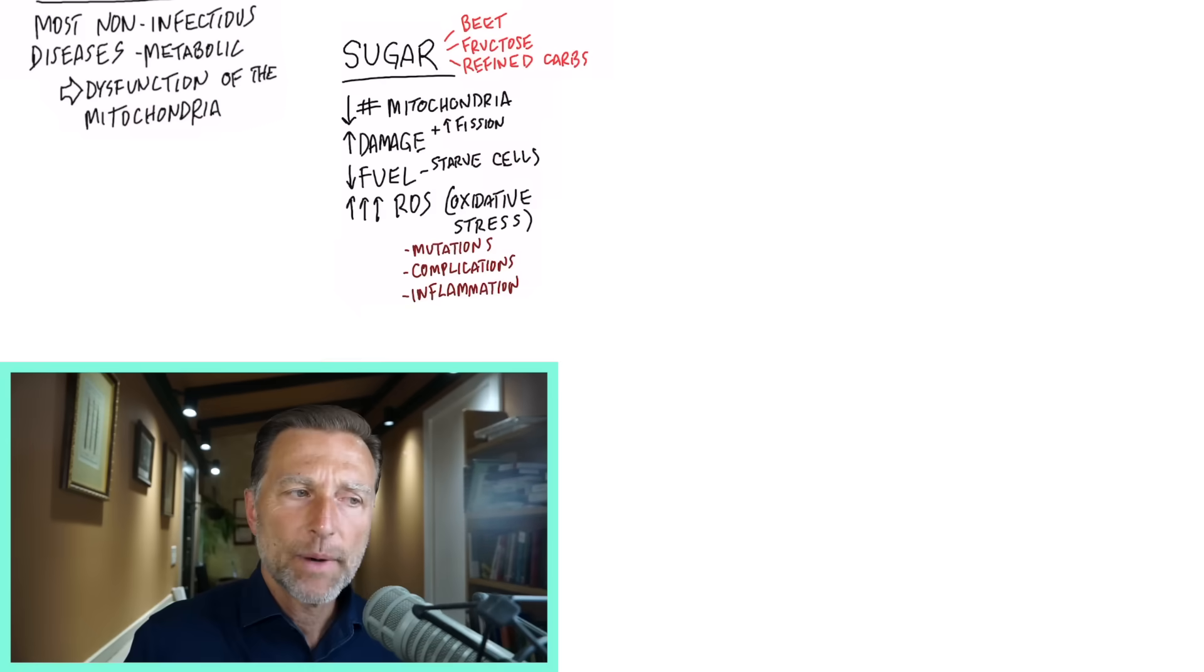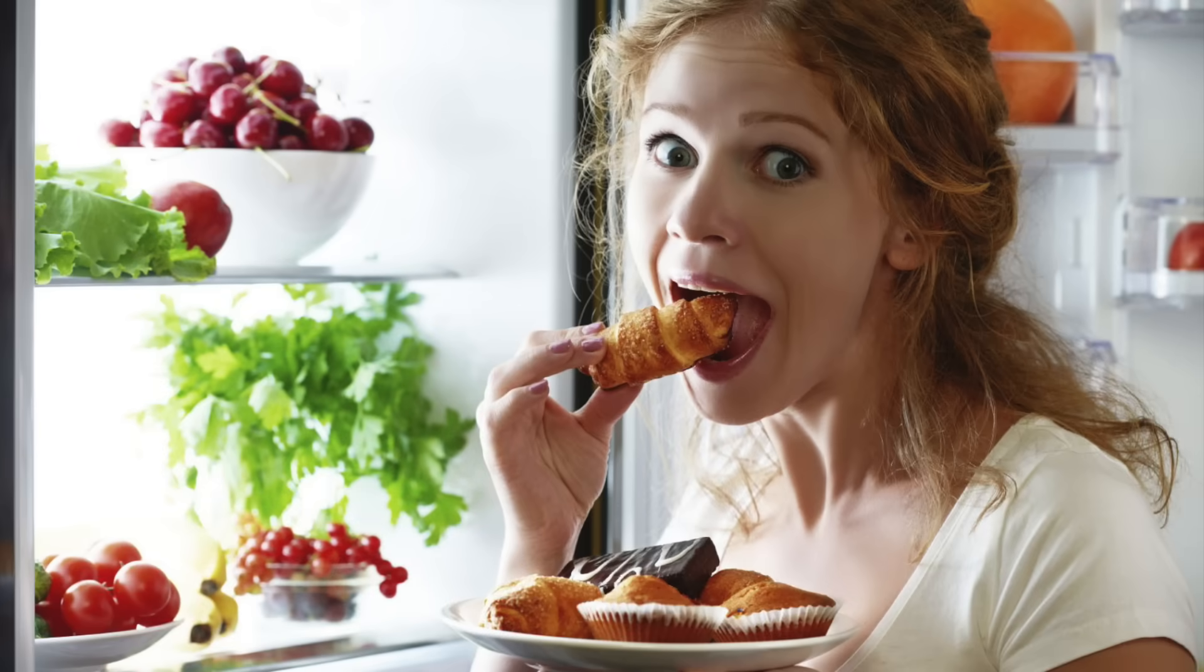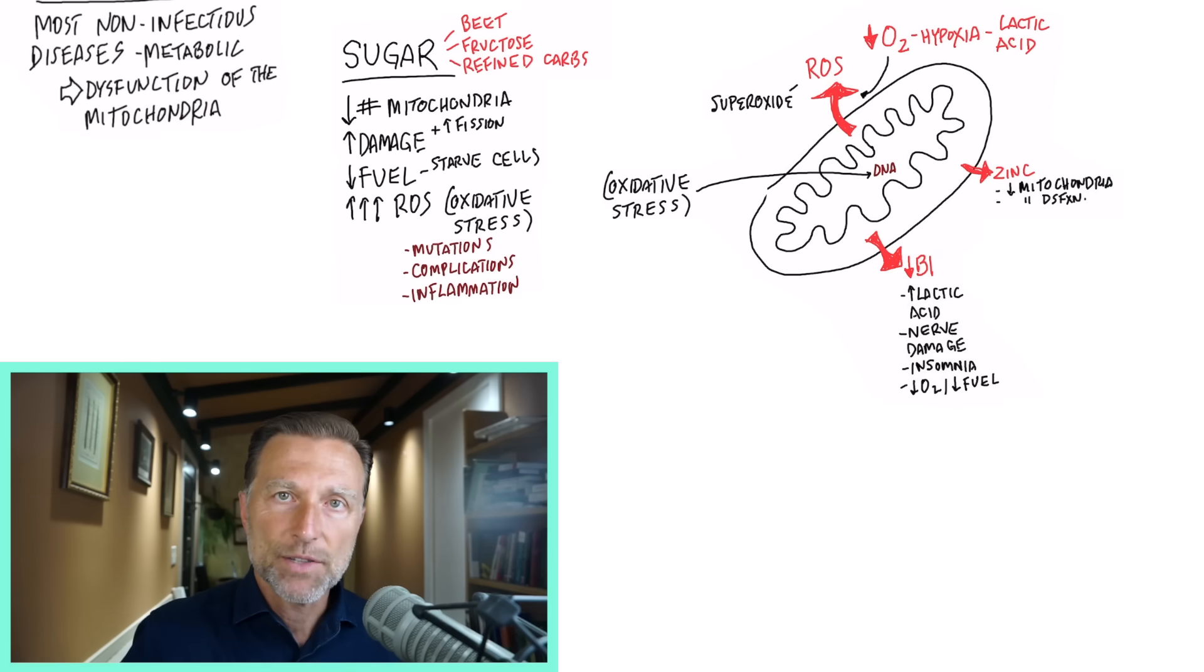So how does that relate to the mitochondria? Well, this is what happens. When you consume a lot of sugar, glucose, or things that turn into sugar, what happens to the mitochondria is it becomes damaged. Now, the purpose of the mitochondria is to turn fuel into energy with the help of oxygen.